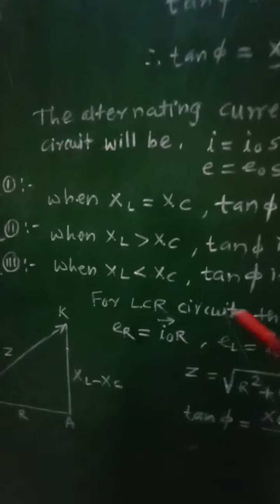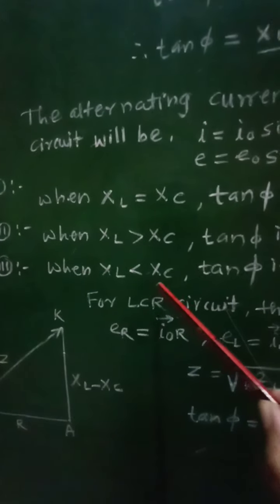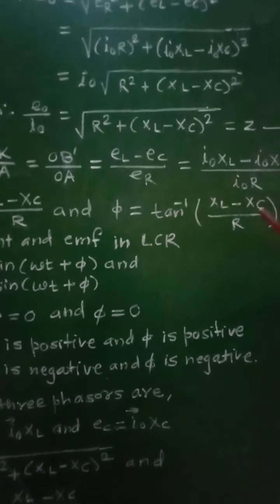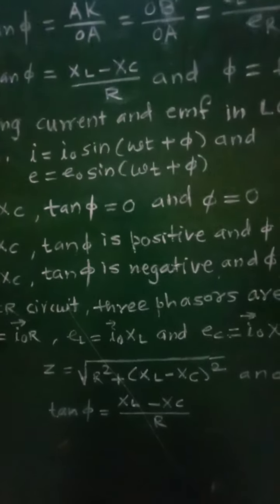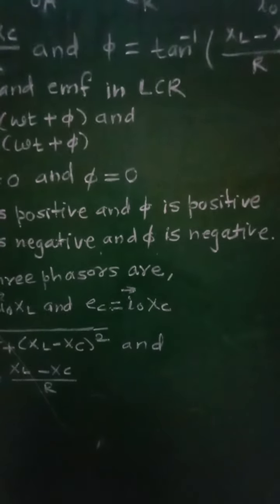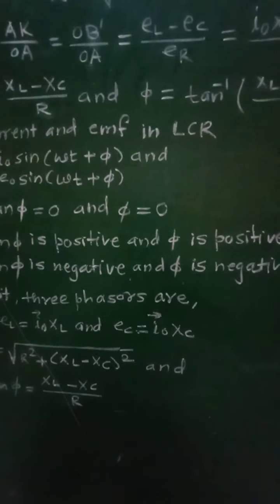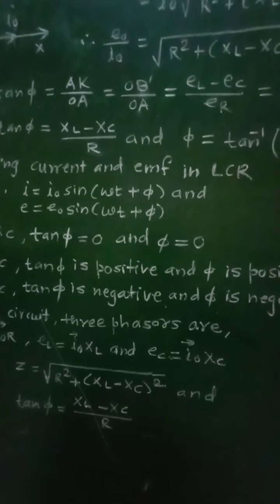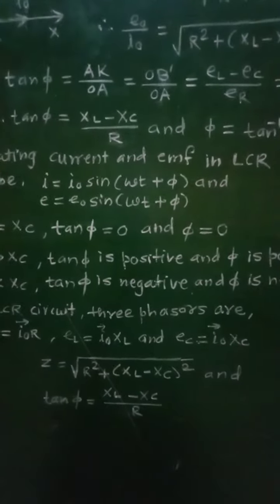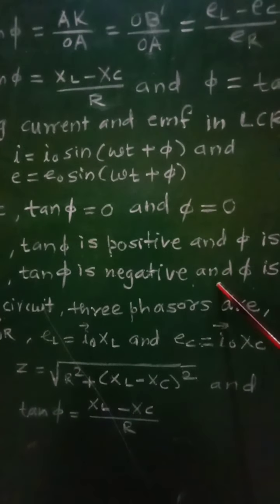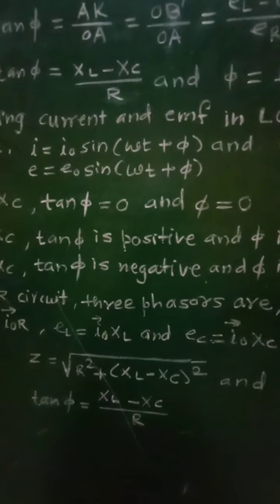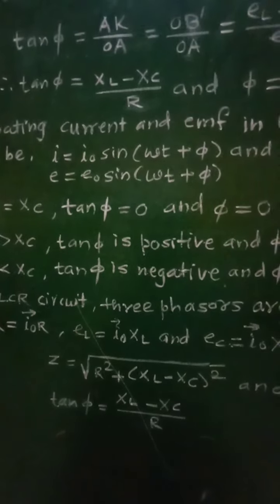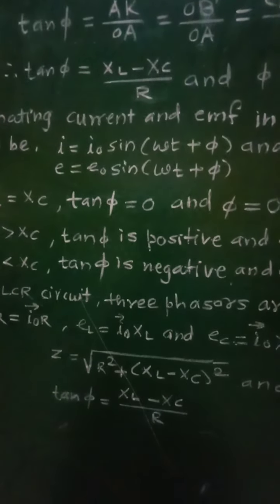Third case: when XL < XC. The difference is negative, so tan φ is negative and φ is negative. Hence, the voltage lags behind the current by a phase angle of φ, and the AC circuit is capacitance-dominated.